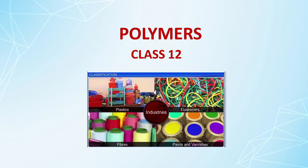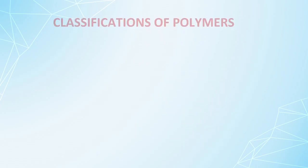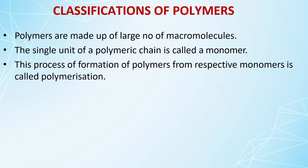Welcome dear students to chapter 15 on Polymers. In this chapter, we will learn about different polymers. The word polymer relates to macromolecules — polymers are made up of very large molecules which have very high molecular mass. When the molecular mass exceeds 10² units, the range of molecular mass lies between 10³ to 10⁷ units.